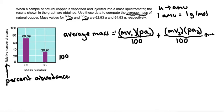If we are computing average mass, let's bring down average mass equals, so the mass value of the first isotope is 62.93. We'll start with the 62.93 and we'll multiply it by its percent abundance.